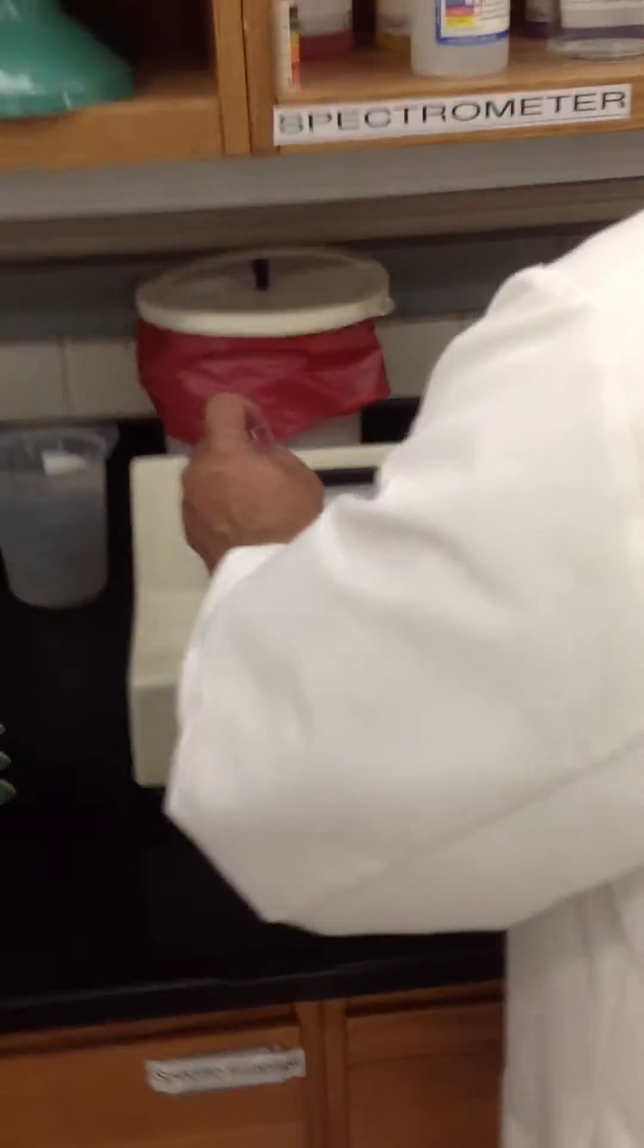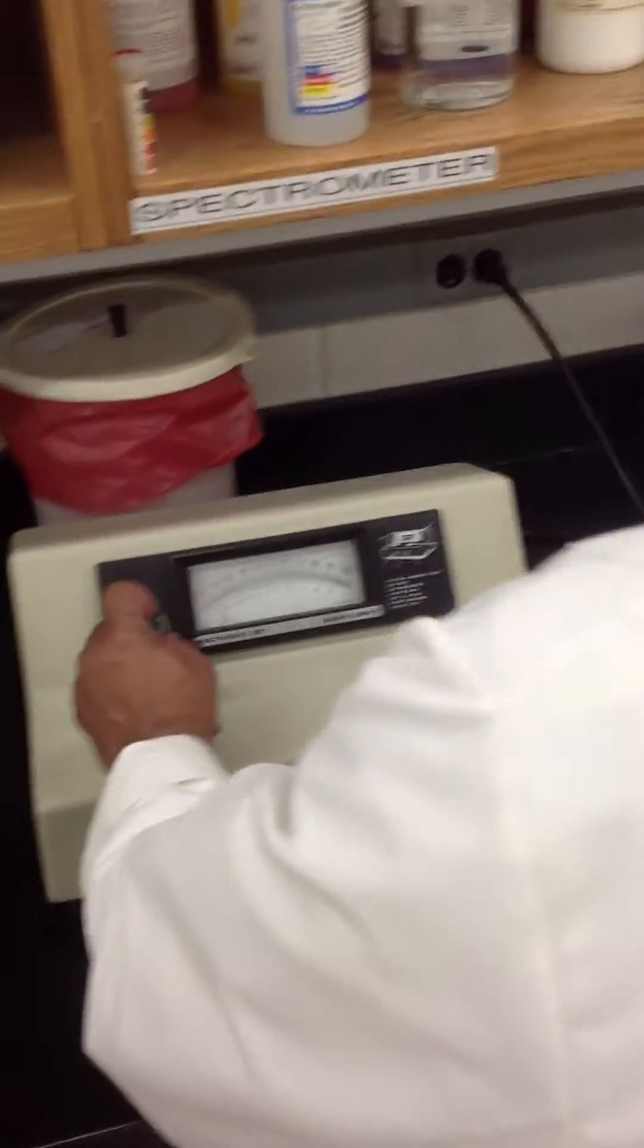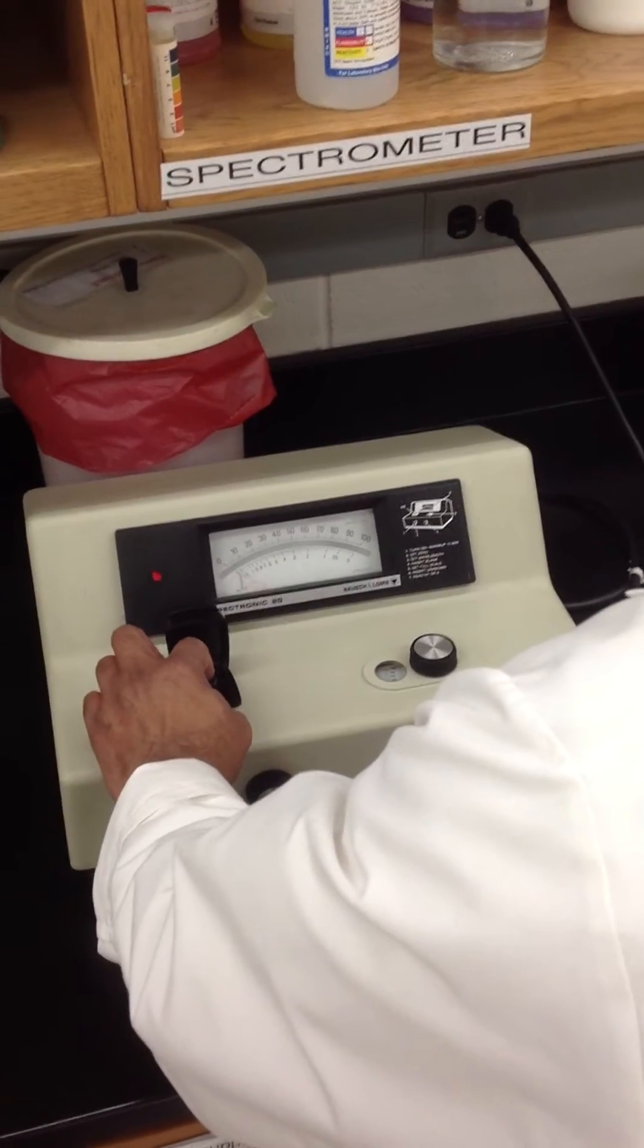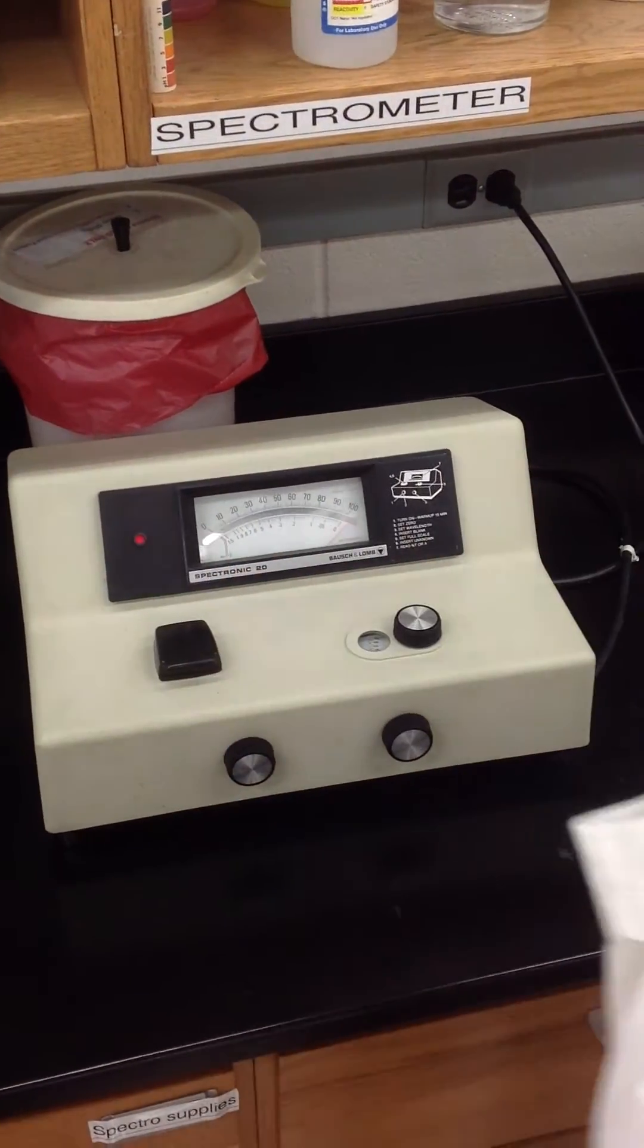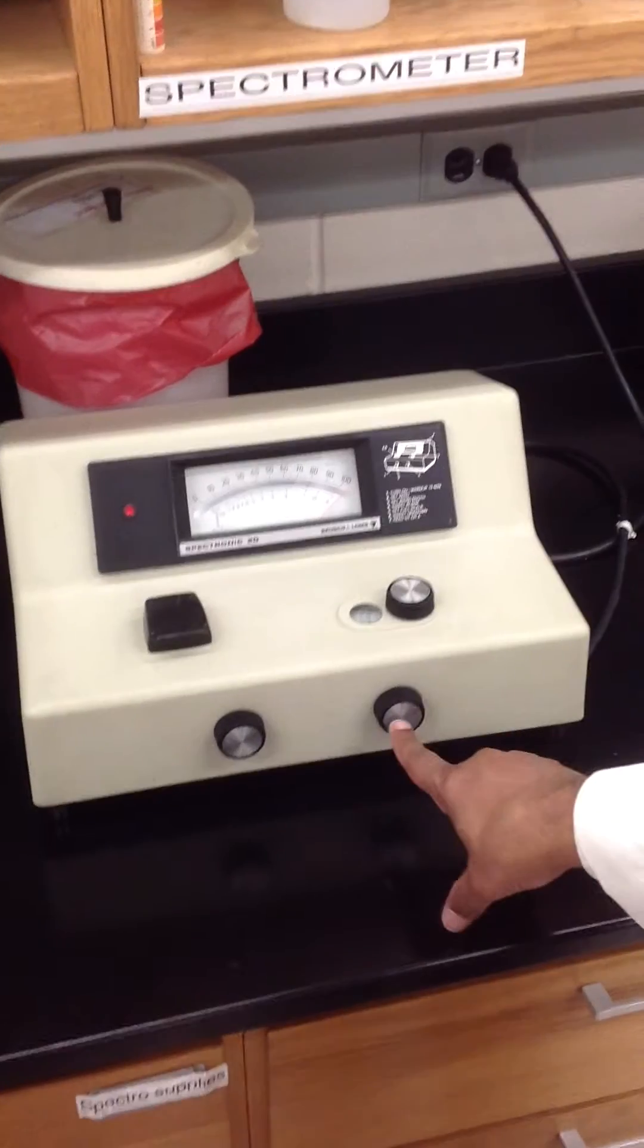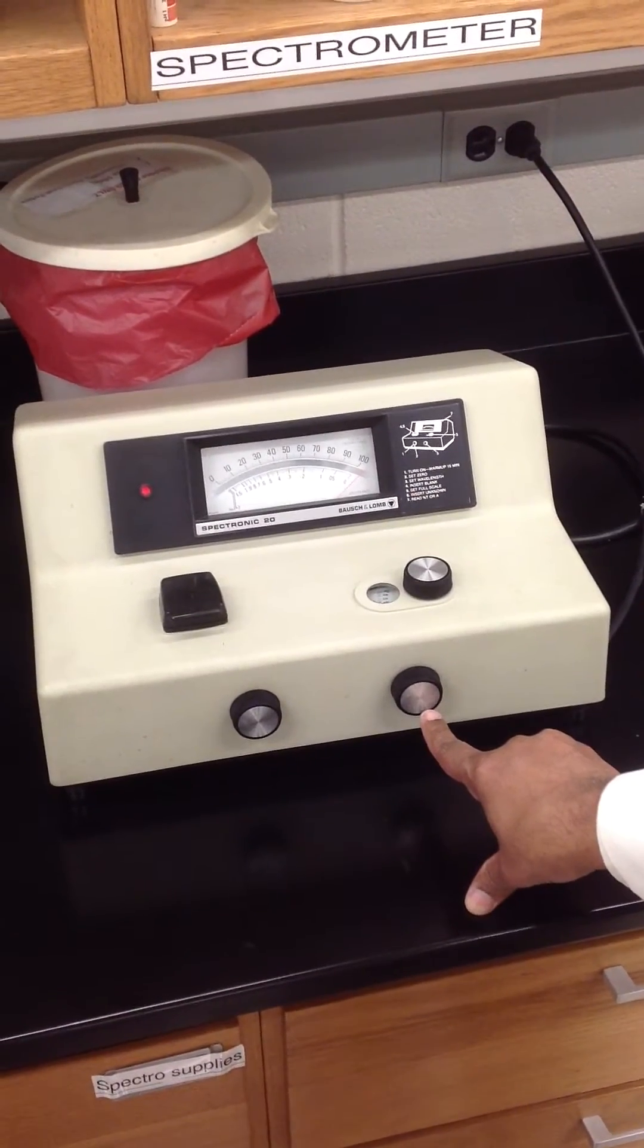So once you turn it on, to zero it, you must have a tube in here or else you cannot zero it. So you put your blank solution and you actually zero with this knob.